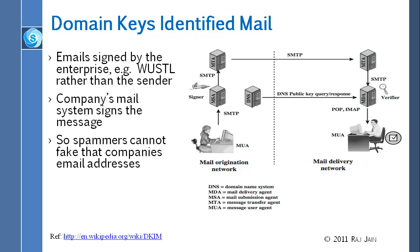Here is how it works: you sign it at the mail user agent level, and use normal SMTP to send it to your mail submission agent. The domain signs the outgoing mail. Anybody can get the domain's public key by querying DNS and asking what is the domain's public key — hopefully that is correct, since DNS can be manipulated. Then you can verify that the signature is correct, confirming the mail is from that domain, and therefore you don't have to put it in junk mail.